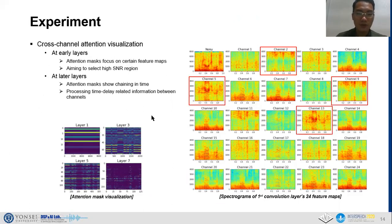This slide shows the visualization of attention mask. The visualization illustrates different mask behaviors at different downsampling blocks. At early layers, the masks focus on certain feature map channels. For example, at layer one, the masks highlight the second, the fifth, ninth, and thirteenth channels of feature maps. As we can see from the figure on the right, each channel highlights clean speech region where it had high energy and small amount of noise component. In detail,